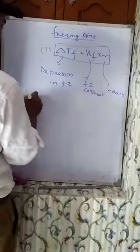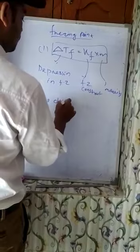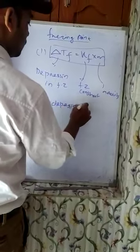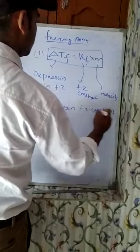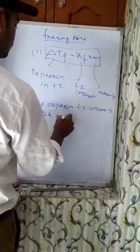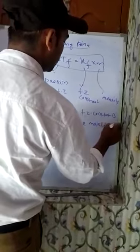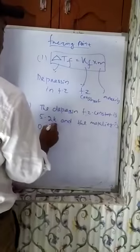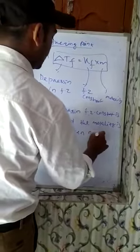So in the question, when the question is asking for the depression, the freezing point constant is 5.2 Kelvin and the molality is 0.078 M. Then calculate ΔTF.